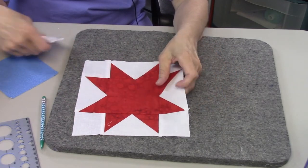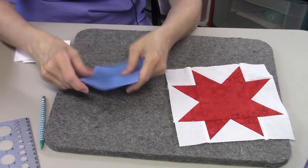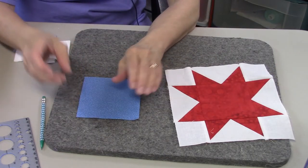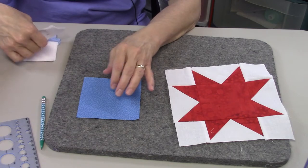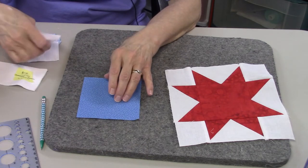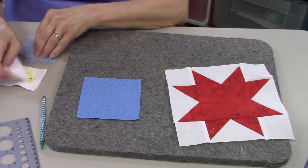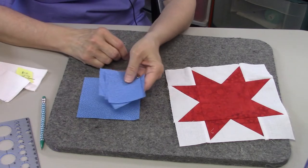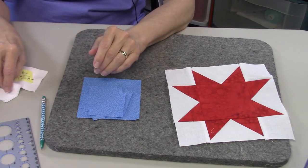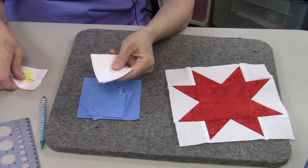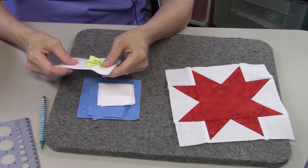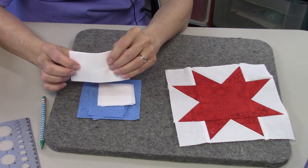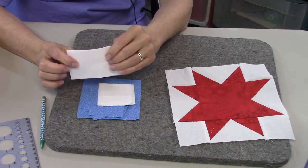So what you're going to need to make this block is you're going to need one four and a half inch square of your star color. And then you're going to need eight two and a half inch squares, all of the same color. And then for your background you need four two and a half inch squares and then you need four two and a half by four and a half inch rectangles.